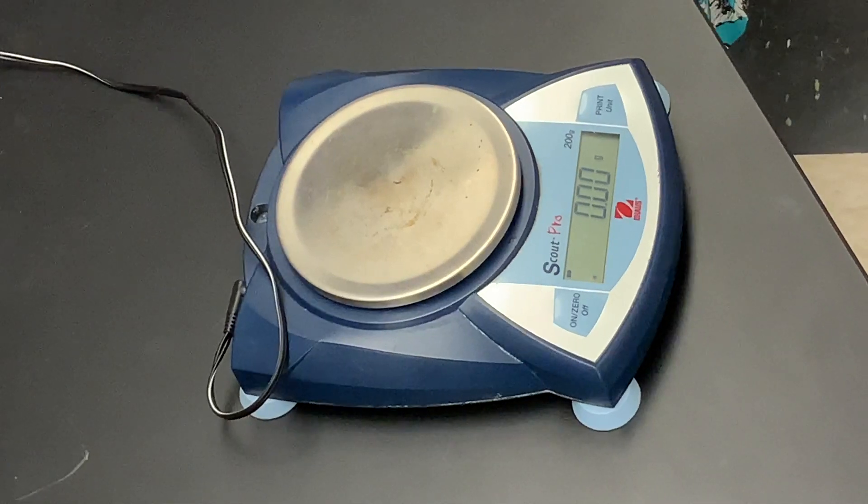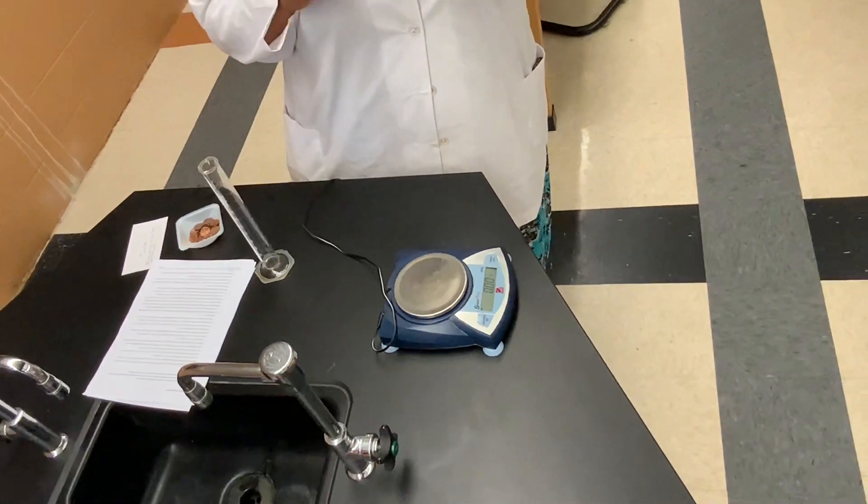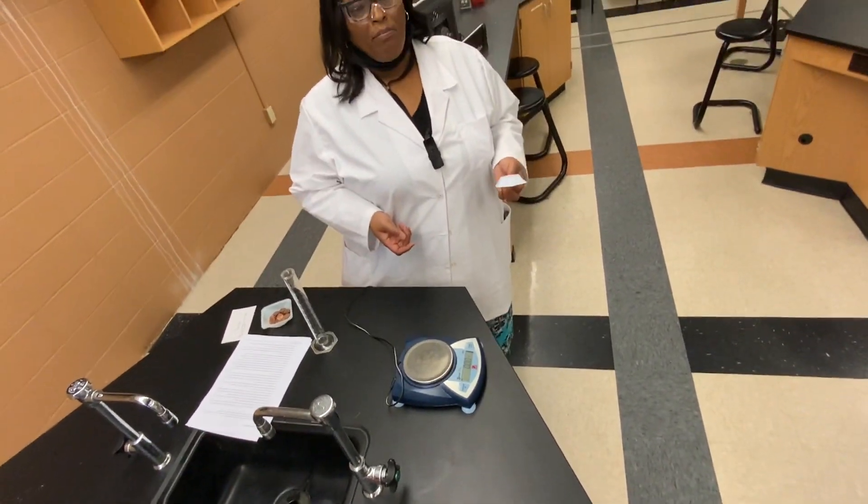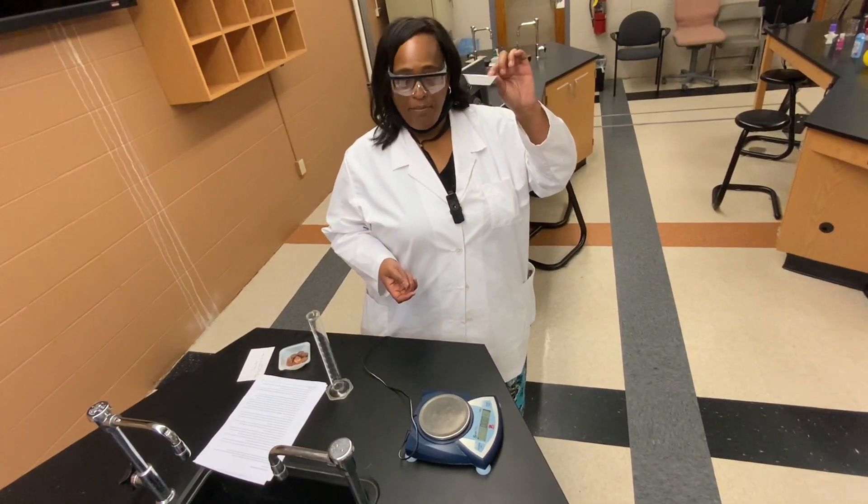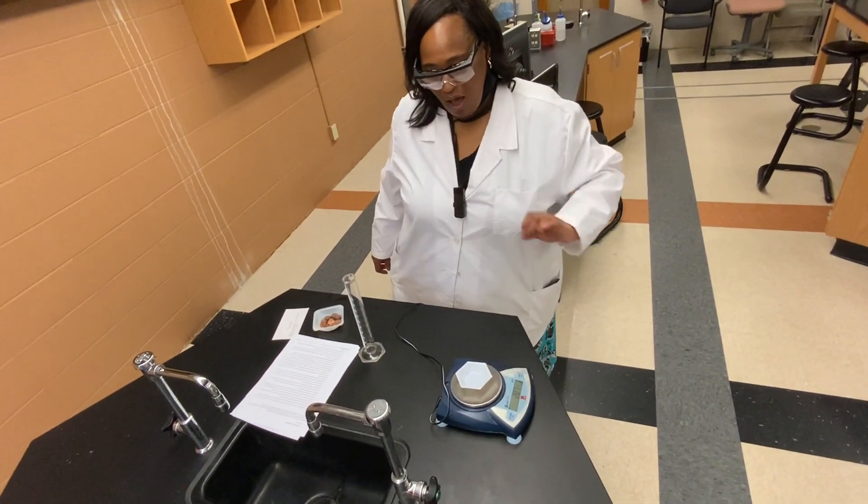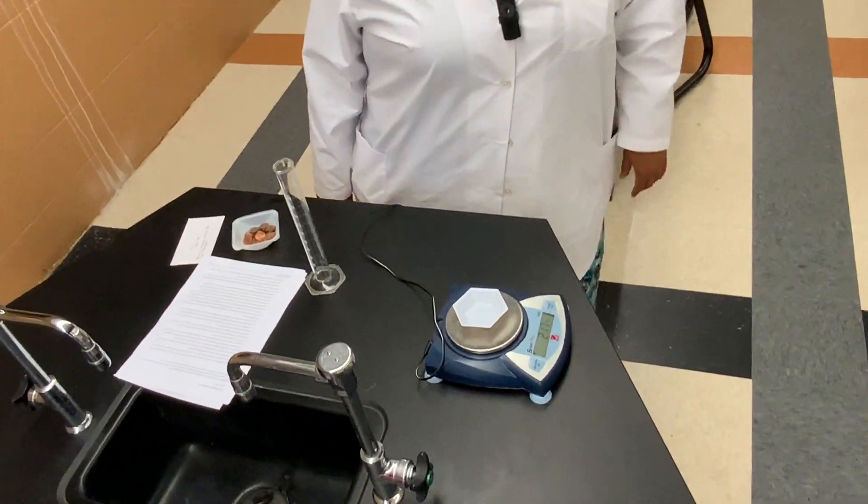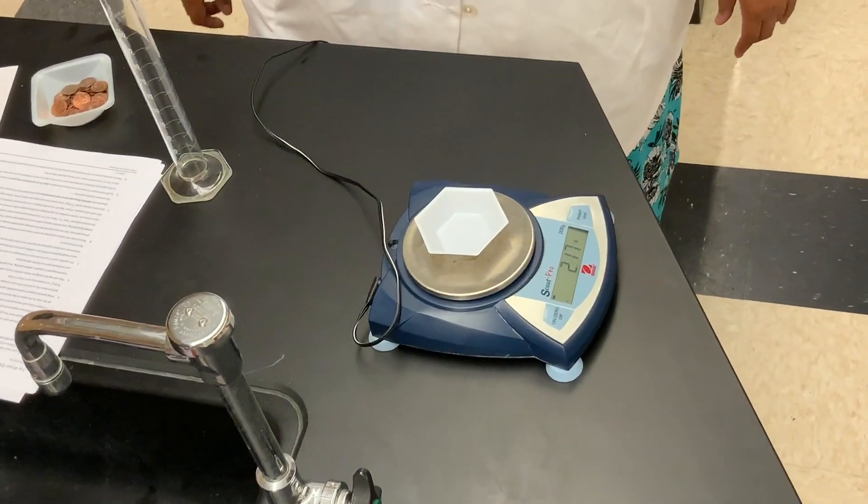Also, when you use a balance to determine the mass of something, always use either a piece of weighing paper or a weigh boat. I'm going to place the weigh boat on the stage of the balance. We notice that now the balance is recording the mass of the weigh boat.